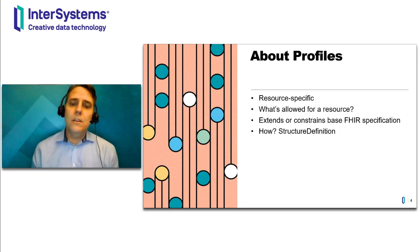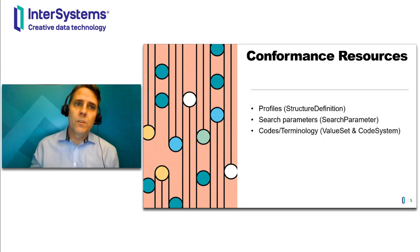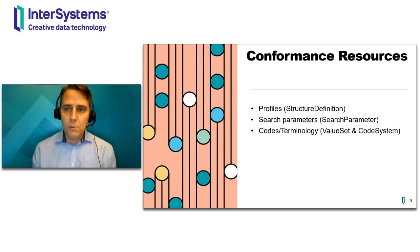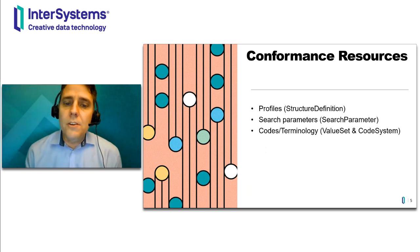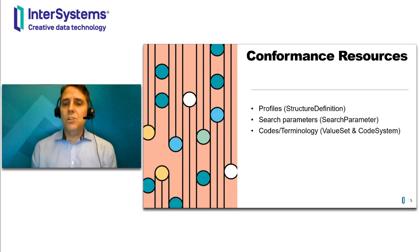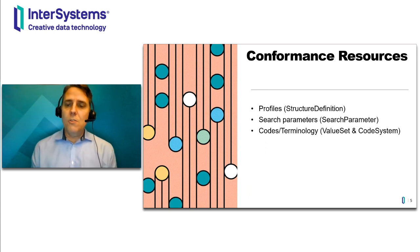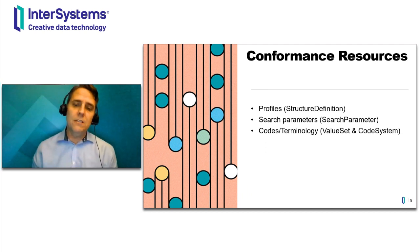And how does a profile do that? It does it with something called a structure definition. A structure definition is a special FHIR resource called a conformance resource that defines a profile. Conformance resources are metadata that define the building blocks of a FHIR implementation. There are more parts to a FHIR environment than just profiles — for instance, there are search parameters and codes, which in FHIR are called terminology. So for search parameters in an environment, you have search parameter conformance resources. For codes, you have value set and code system conformance resources defining those pieces of the ecosystem.